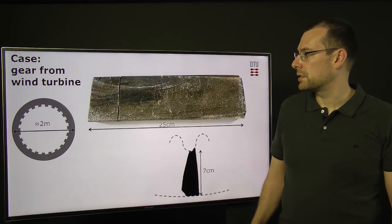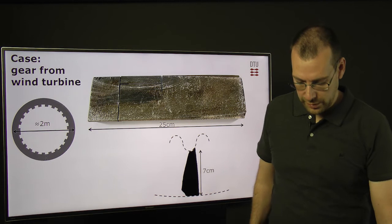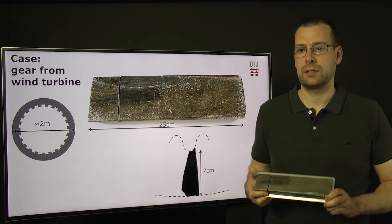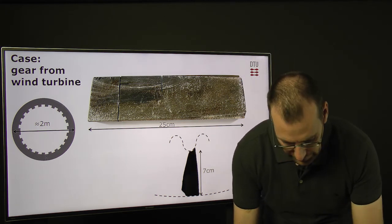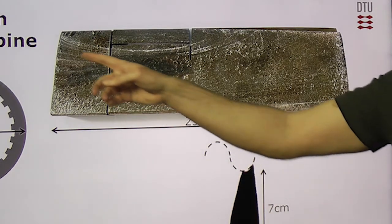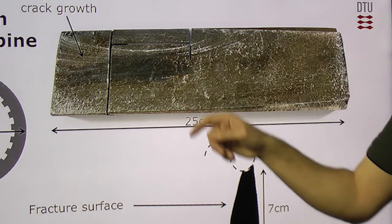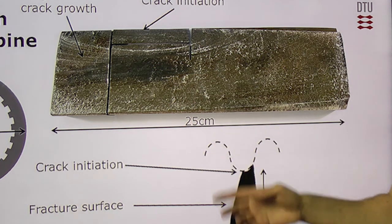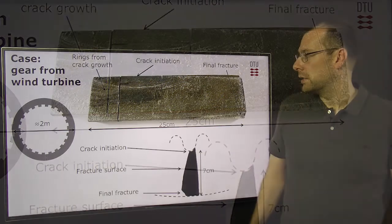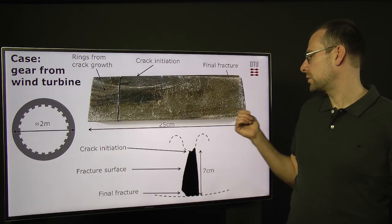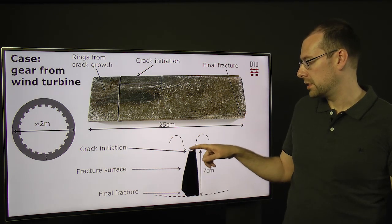So here we have an example, this is a gear from a wind turbine gearbox. We can see it's quite large. This is the cross section of it. And if you look at the fracture surface here, we can see that there are some ring marks here. And these are from fatigue when the crack has grown. And we can also see here where the crack is initiated. We just follow the marks. We can see it's in between two gear teeth. And the fracture, the final fracture area is also quite small in this case here. And we can see that it is at an angle with the fatigue crack.